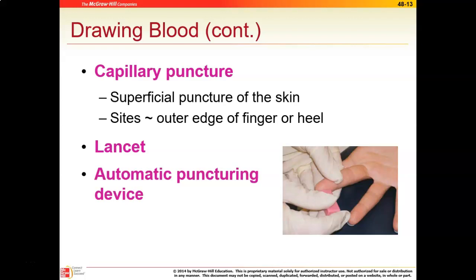We have automatic puncturing devices that automatically puncture at the appropriate depth so they don't go too deep. We don't want to go so far that we'd hit the bone, because that could cause osteomyelitis. These automatic puncturing devices go about an eighth of an inch. We just have to make sure we press consistently during the procedure — if you start to press and pull back, you won't puncture the skin enough and won't get enough bleeding. The specific automatic puncturing device we use is called a lancet.